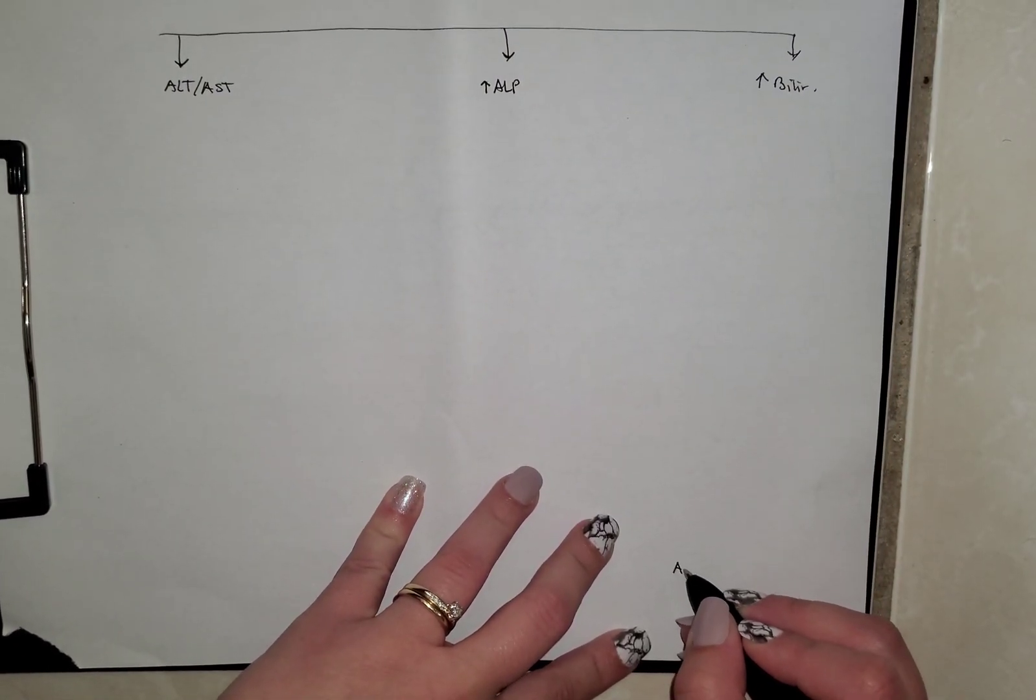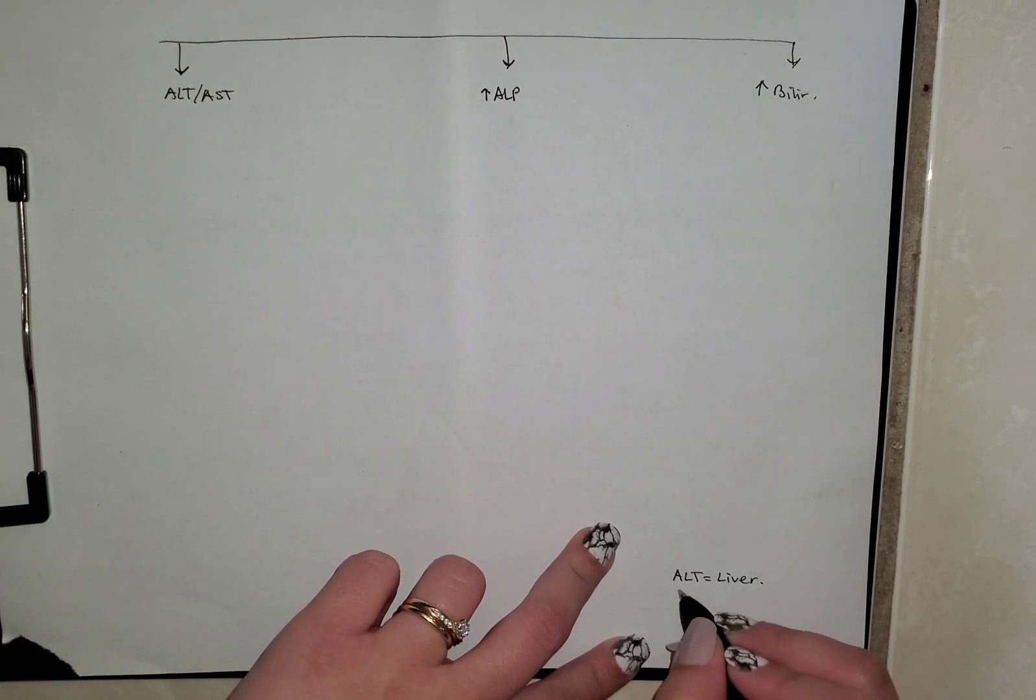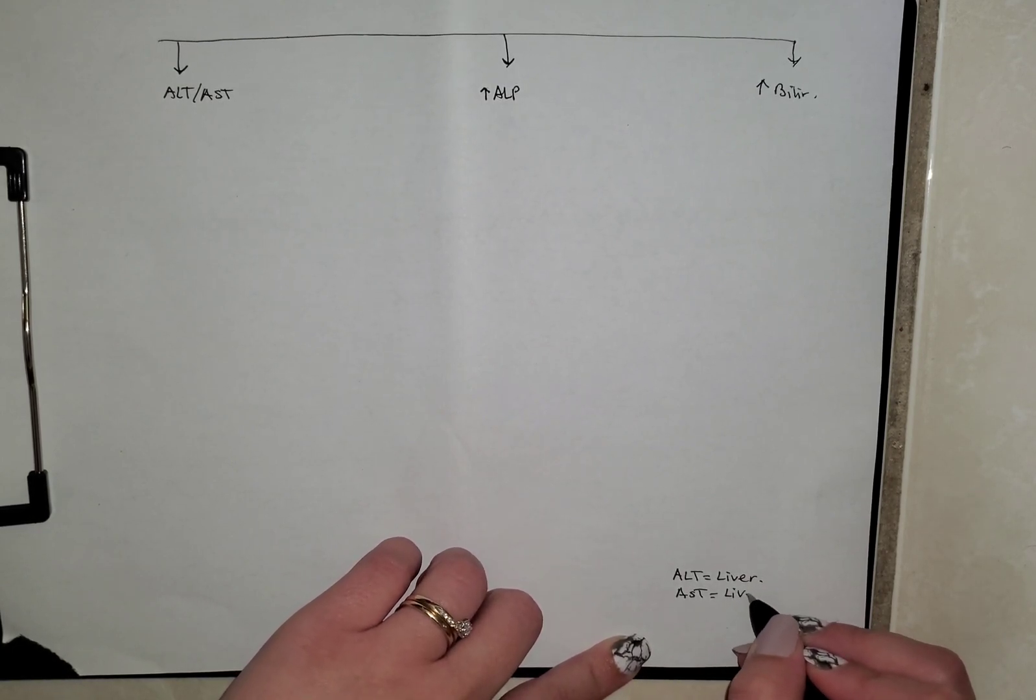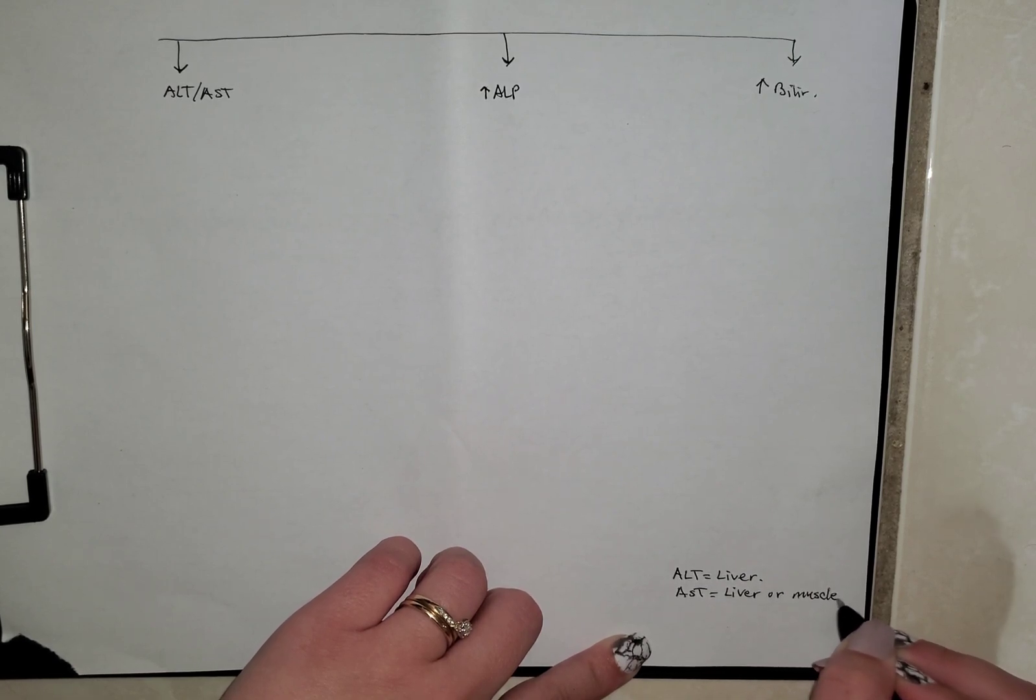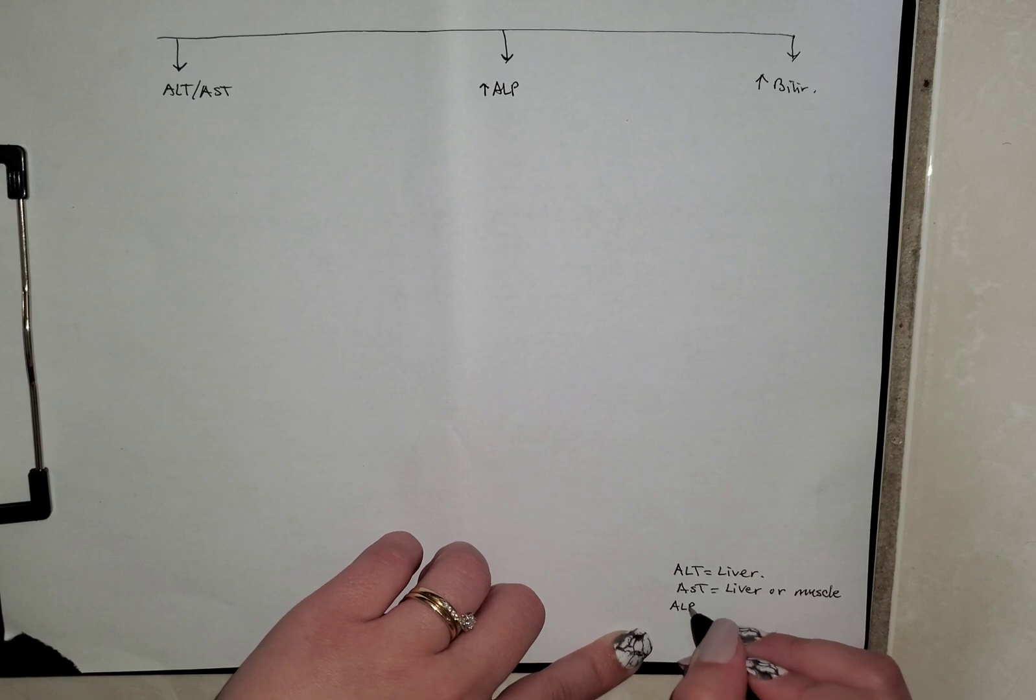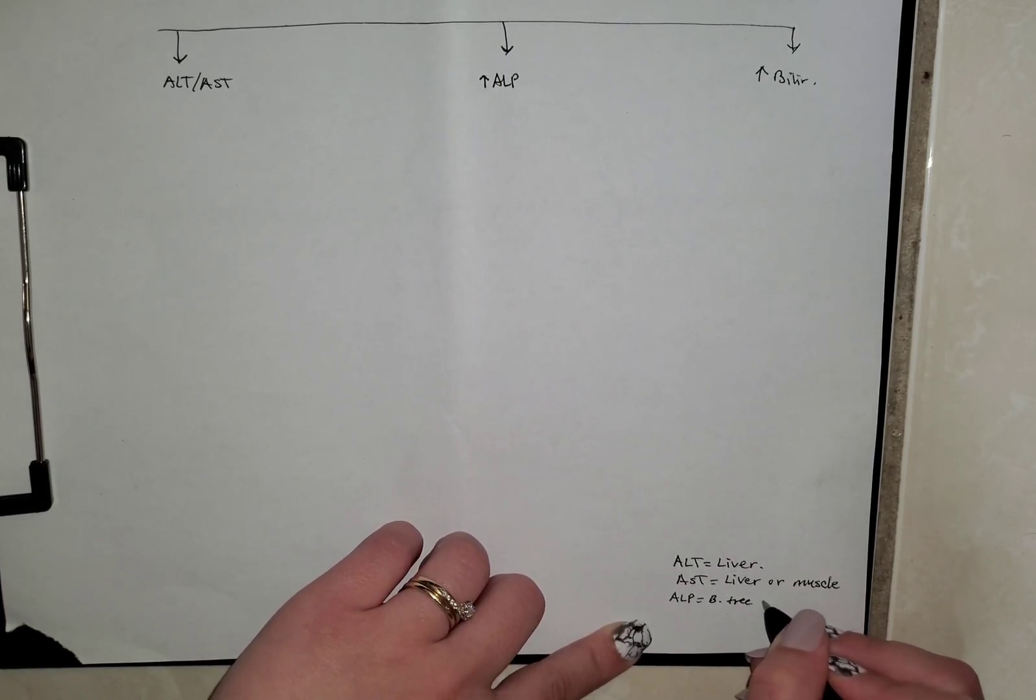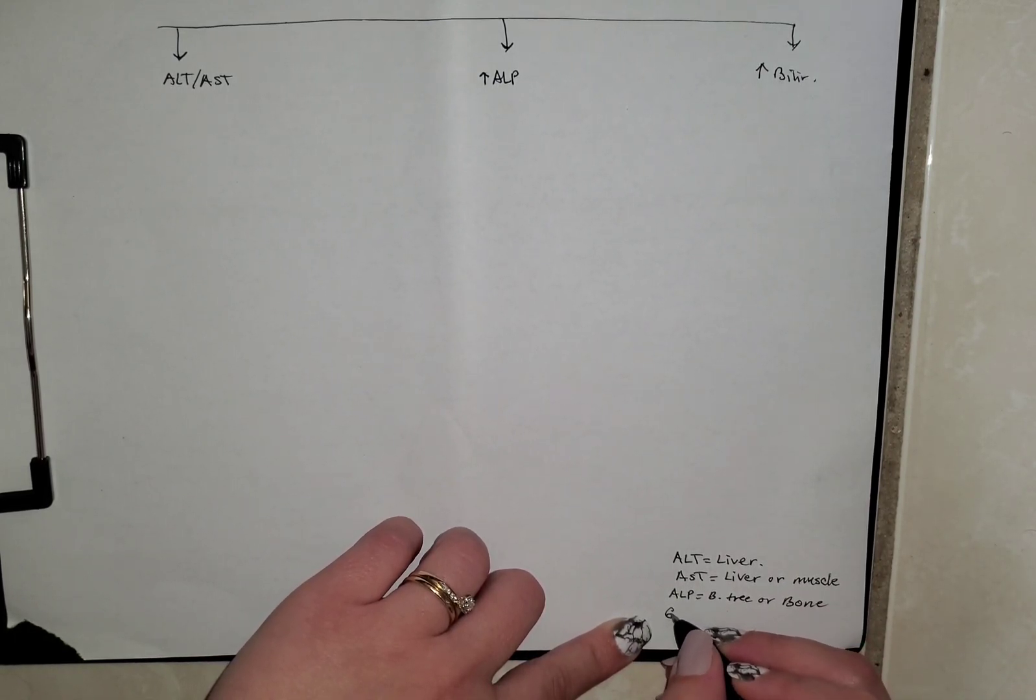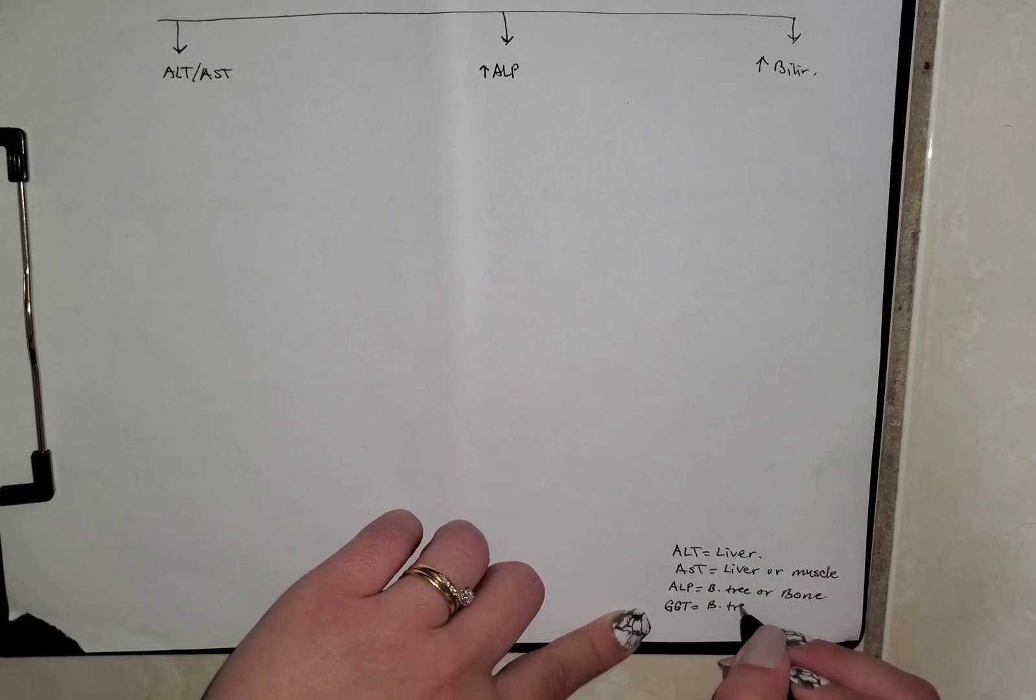If you have increased ALT, this is specific for liver damage. If you have increased AST, this can be liver or muscle, so you might want to order a CK. If you have ALP increase, this can be either the biliary tract or it can be bone, like prostate cancer, which is osteoblastic. And if you have GGT, it'll be specific for biliary tract.